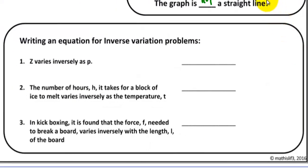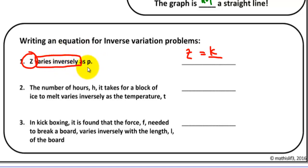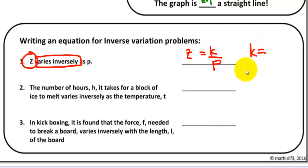How do we write an equation for inverse variation problems? If you have Z varies inversely as P, write that as equal to K divided by something. The variable before 'varies inversely' goes before the equal sign, and the variable after 'varies inversely' will be your denominator. So Z equals K divided by P. To solve for the constant of variation, just multiply Z times P.